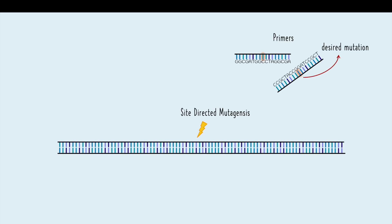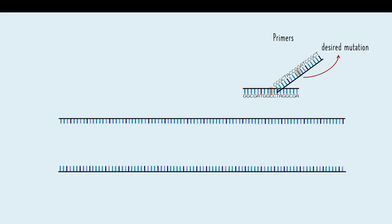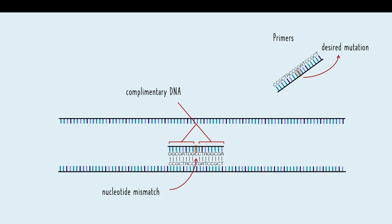The key to site-directed mutagenesis is designing the right set of primers that will incorporate your desired mutation. These primers will contain a single nucleotide mismatch at the position where the mutation is intended to be introduced. The primer should also contain enough nucleotides flanking the mutation site to allow for accurate amplification of the target DNA.